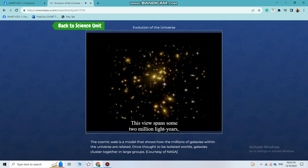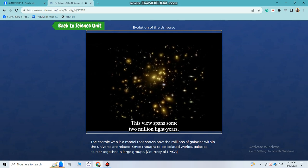This view spans some two million light years, or about the distance between our Milky Way galaxy and the nearest big spiral. Into this space, Abel 1689 packs more than 500 galaxies.